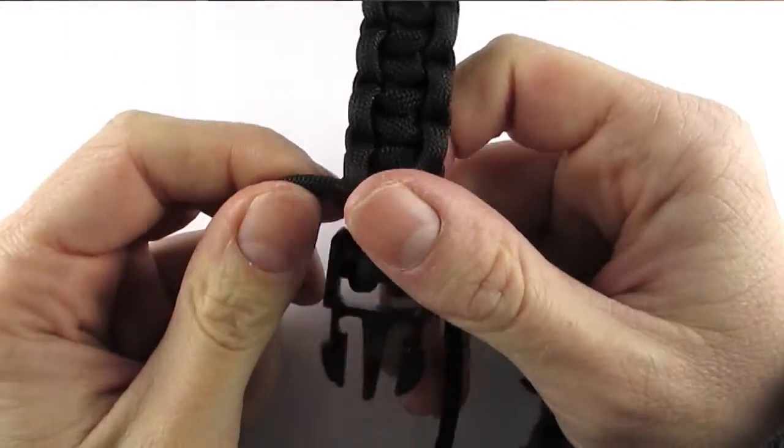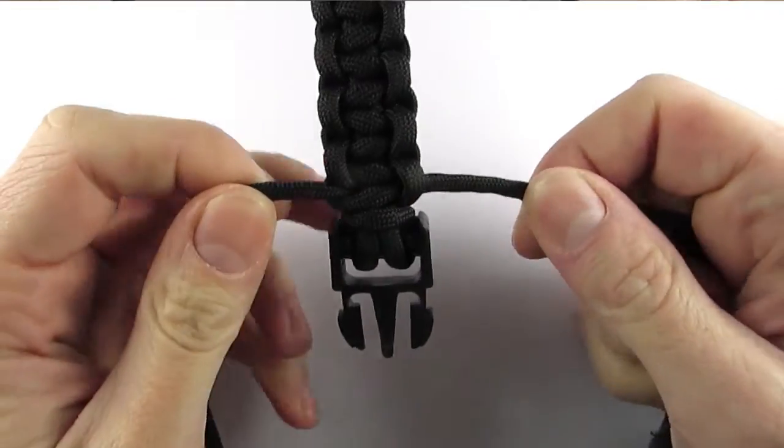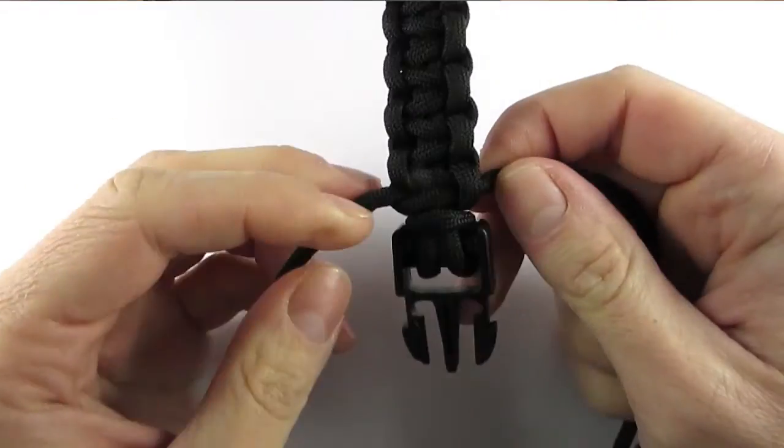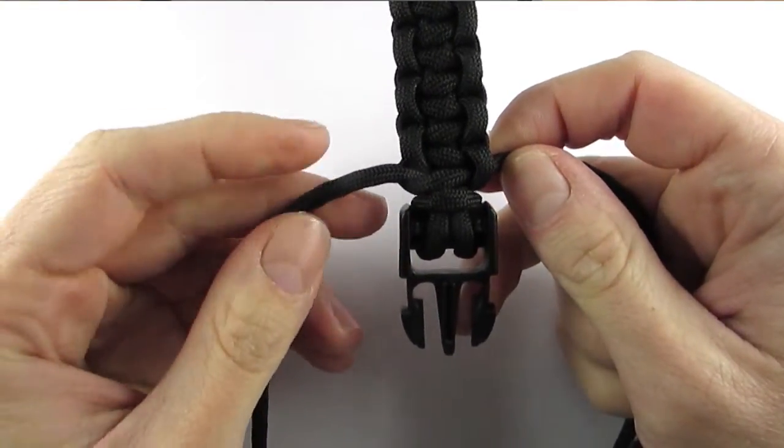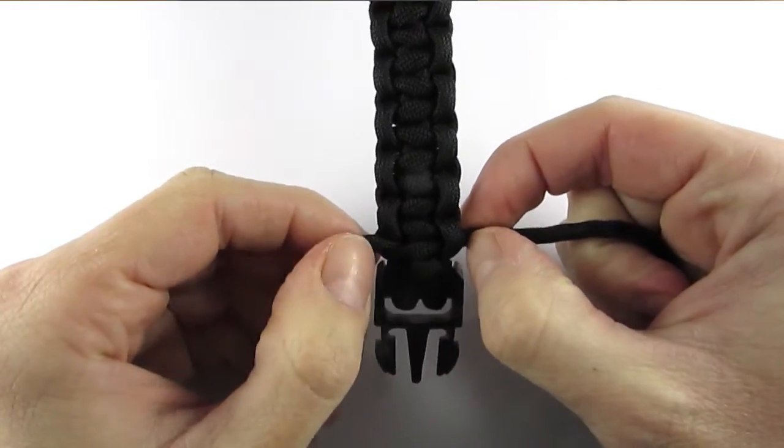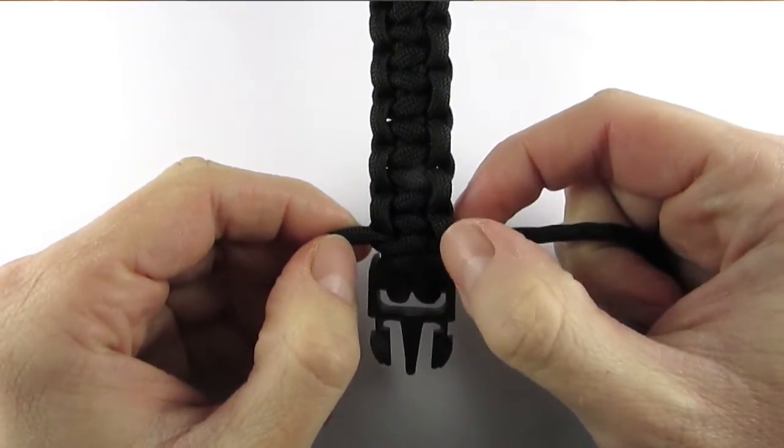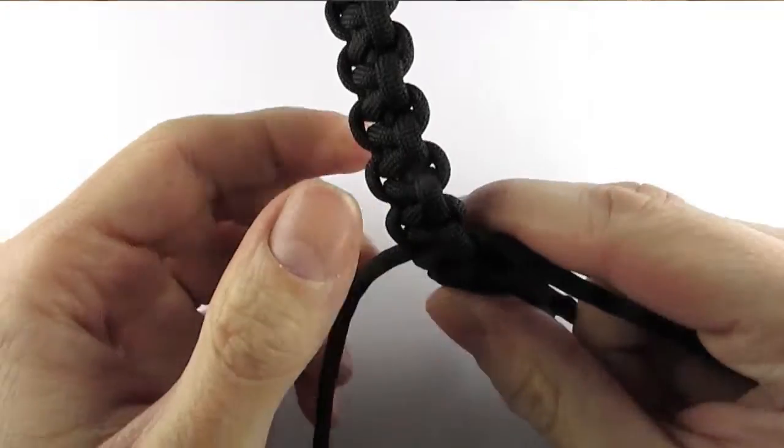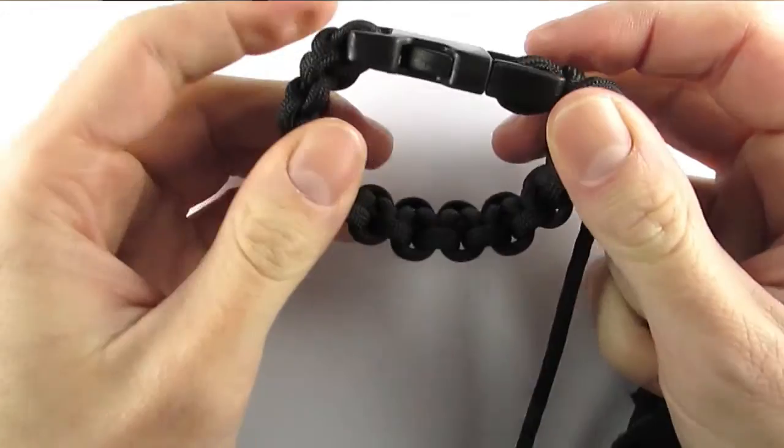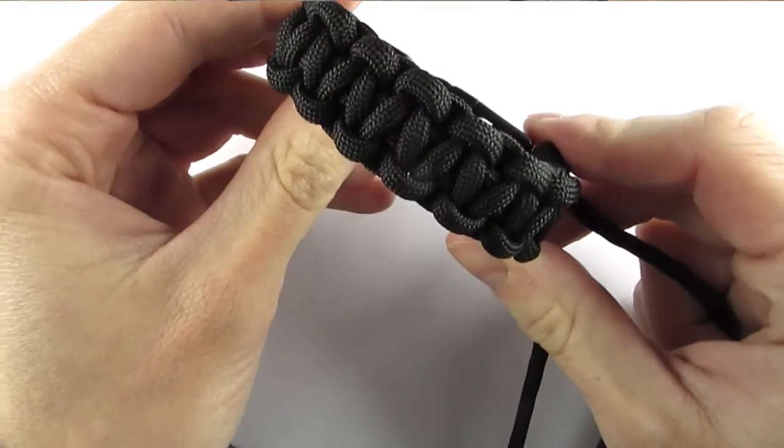Okay guys, I'm back. I've weaved the bracelet to the other part of the buckle, and at this point all you have to do is cut the ends and melt them and your bracelet is complete. You can then put it on by closing your buckle and you have a beautiful bracelet.